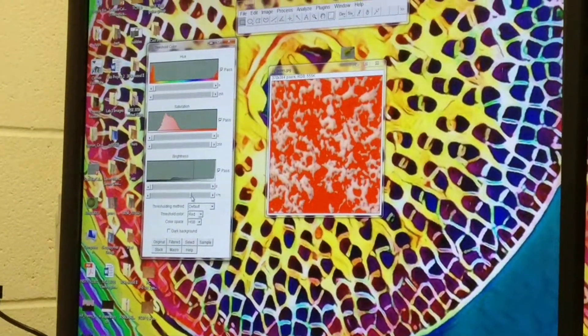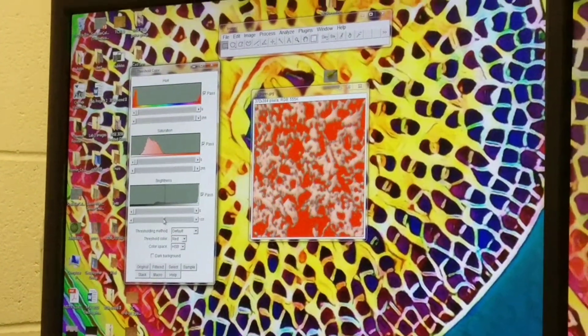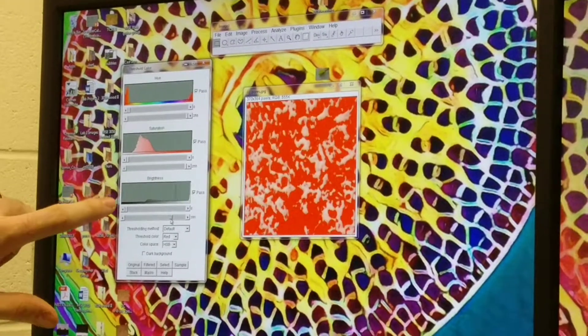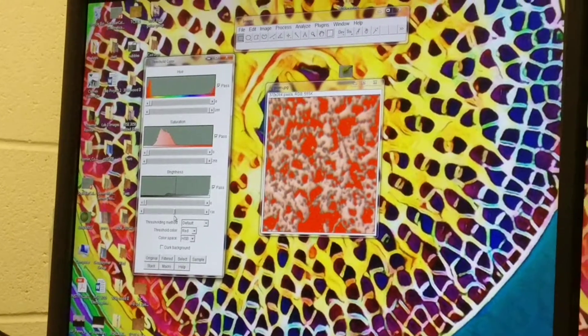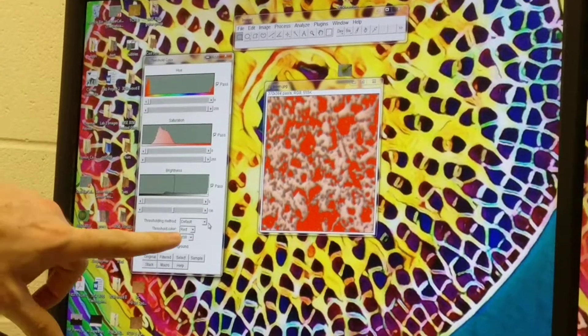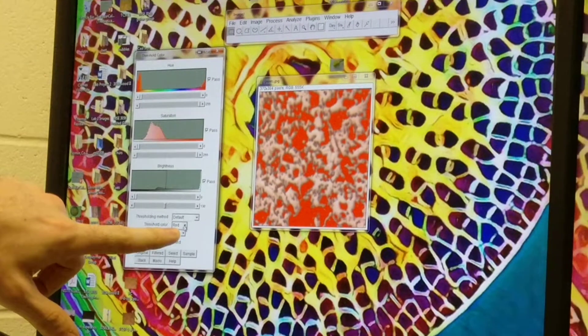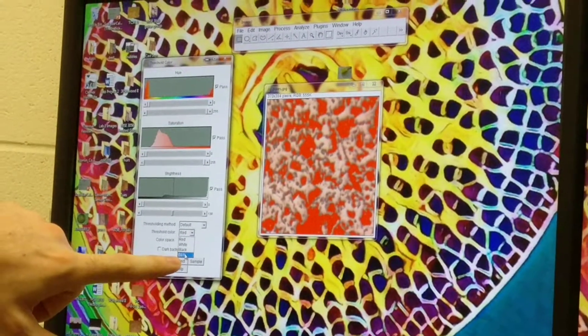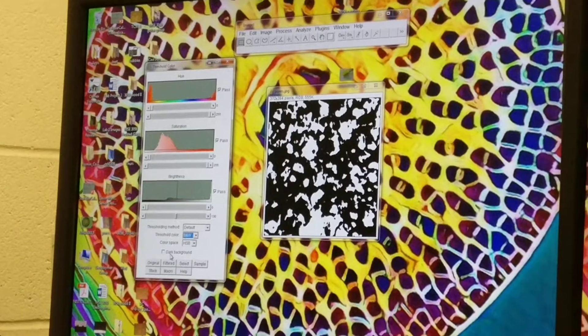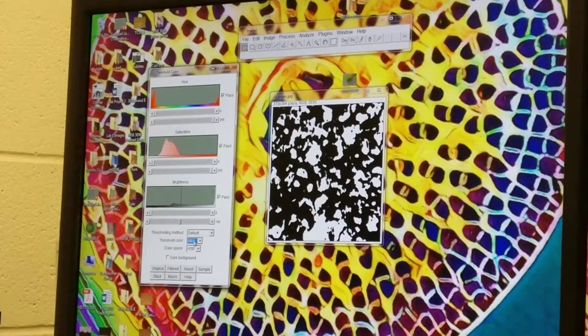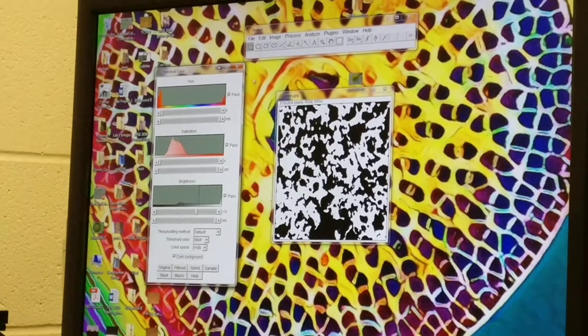If we uncheck this dark background, you'll notice the pores are actually selecting the darker portions of the image here. Pick a reasonable area. Then instead of red as the threshold color we're going to change that to B and W or black and white. You'll notice the pores are actually turning white here, so I'm going to check dark background again to invert it.